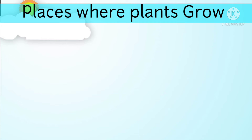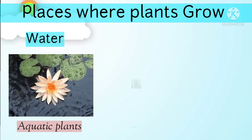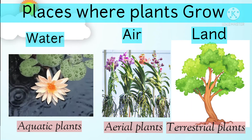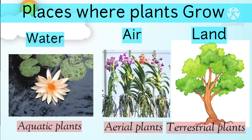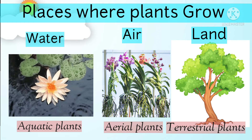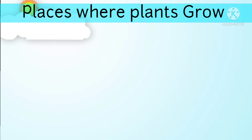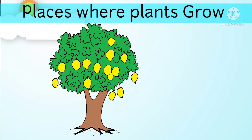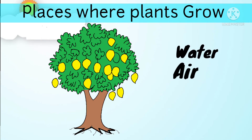Again, the places where plants grow are in the water, air, and land. Now let's have an activity. Let us know the places where plants grow — where does it grow: in the water, air, or land?